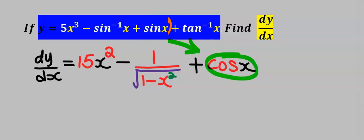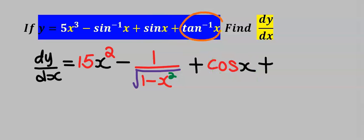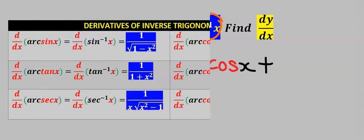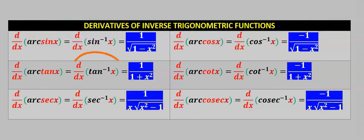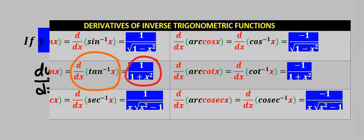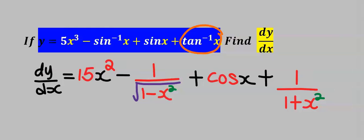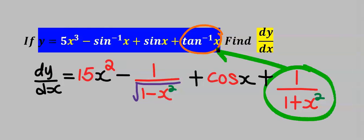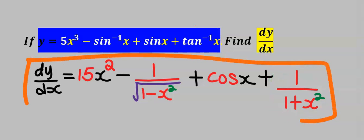Next, let's find the derivative of tan inverse of x. When you differentiate tan inverse of x, you get 1 divided by 1 plus x squared. Hence, the derivative of tan inverse of x is this, and this is our dy/dx.